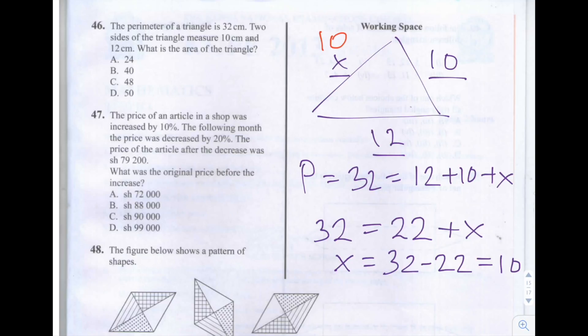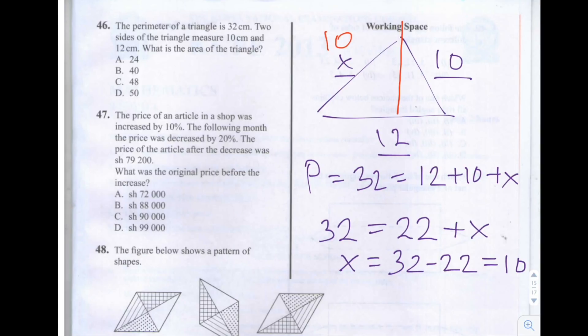So this means that we can use Pythagoras to work out this length here, if we drop a perpendicular the whole way down between these two sides of equal length. So we can drop a perpendicular like so.